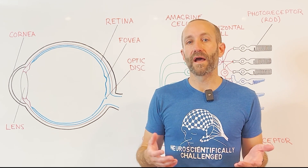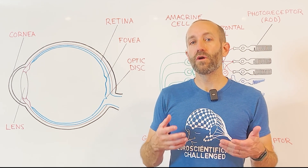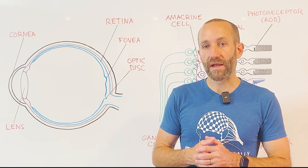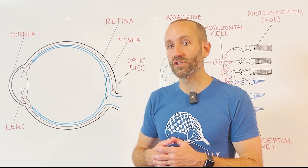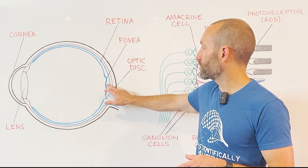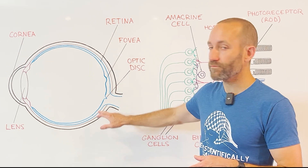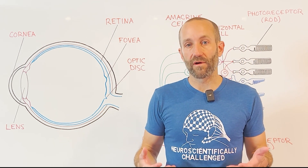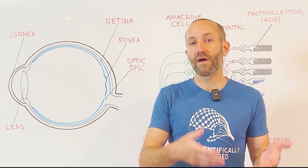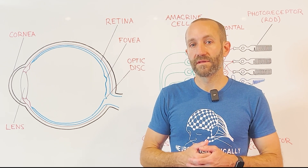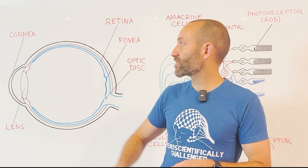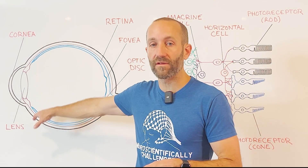Of course, vision begins with the eye, but the neural aspect of vision really starts with the retina, which is the neural structure of the eye and is outlined in blue here. Other components of the eye, however, help to create a focused image on the retina. This is accomplished to a large degree through the actions of the cornea and the lens.